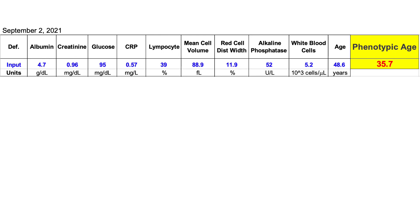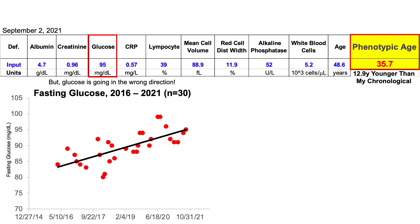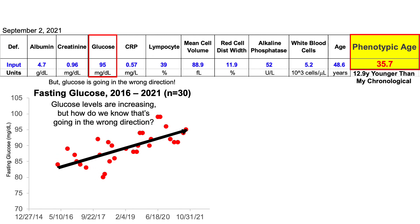In my last video, we saw that my biological age, as indicated by Morgan Levine's phenotypic age calculator, was about 13 years younger than my chronological age. But there's room for improvement, including my glucose levels, which were 95 milligrams per deciliter on this test. Now that's going in the wrong direction, as shown here. This is data for 30 blood tests over the past six years, and we can clearly see that the trend for glucose is increasing during that time span.